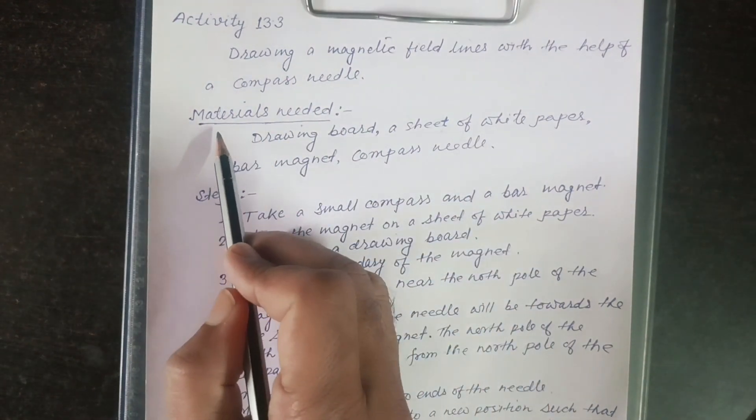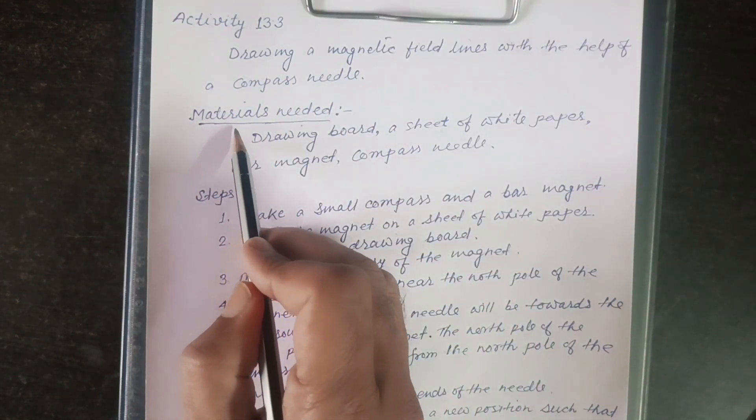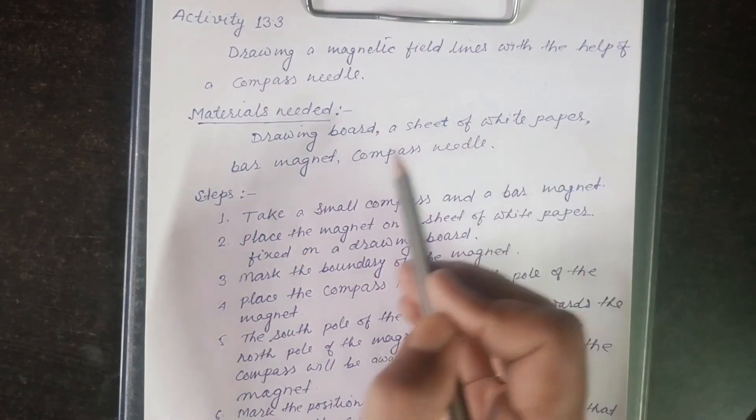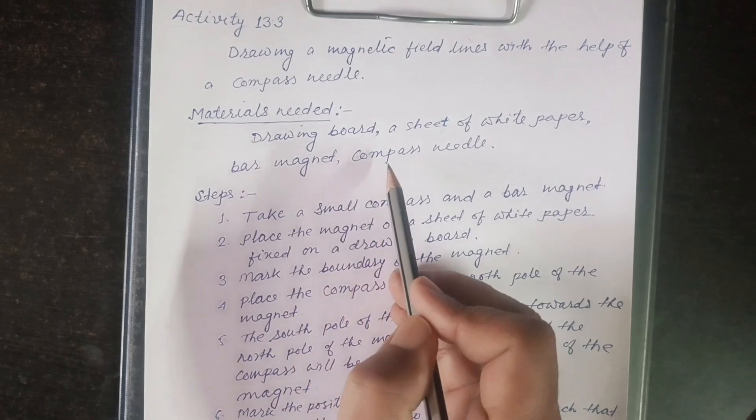For doing this activity, materials needed are drawing board, a sheet of white paper, bar magnet, and compass needle.